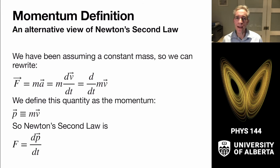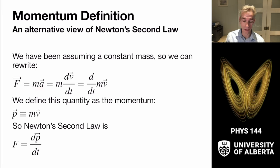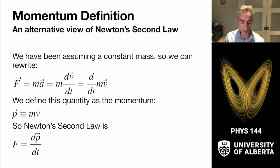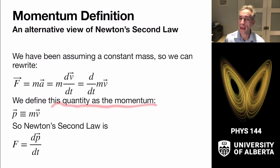Let's start by defining momentum. This stems from an alternative view of Newton's second law. We've been assuming that force equals mass times acceleration. We can rewrite using calculus that acceleration is the time derivative of velocity. Since mass is constant, the time derivative of the quantity mass times velocity equals force. We call that quantity — mass times velocity — the momentum.